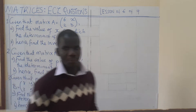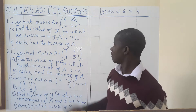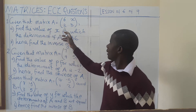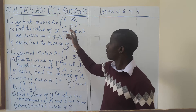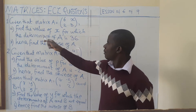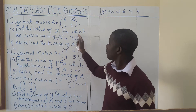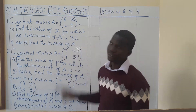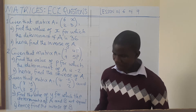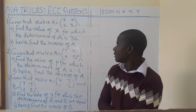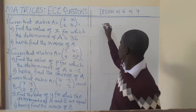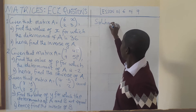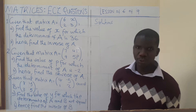Looking at the first one: given that matrix A is given, find the value of X for which the determinant of A is 36. So what are we supposed to do? Let's find the solutions.